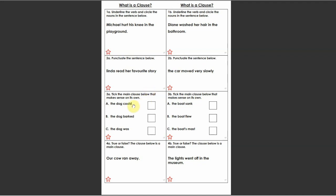Thirdly, it says tick the main clause below — the one that makes sense on its own. Some of these make sense and some of these don't. So: A — 'the dog could think about it' — does that make sense on its own? B — 'the dog barked' — does that make sense on its own? Think about what 'barked' means — the type of noise. And C — 'the dog was' — does that make sense on its own? Which one do you tick? Which one makes sense on its own?